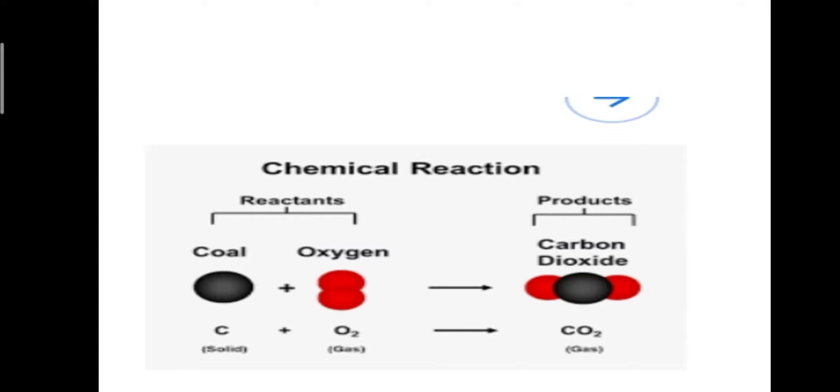Reactants contain two substances: carbon and a molecule of oxygen. The atomic mass of carbon is 12, and the molecular mass of oxygen is 32. 32 plus 12 equals 44, and the total mass of the product